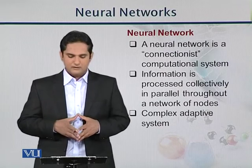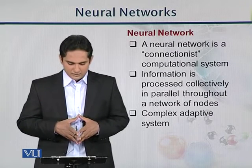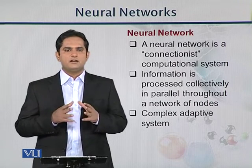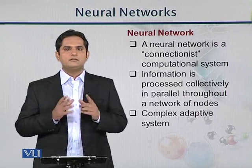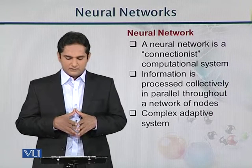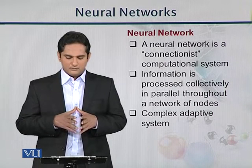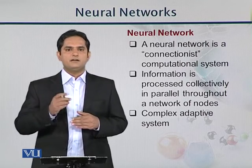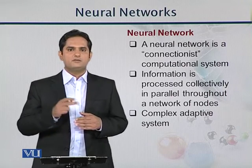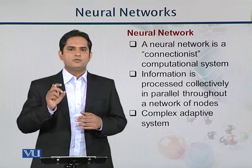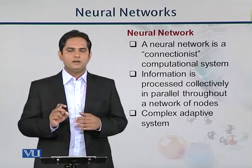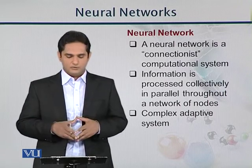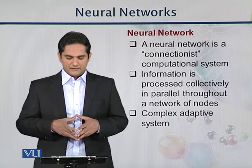So basically, what is a neural network? It is a connectionist computational system. Connectionist means that the resources are all connected to make one network. Then information is processed collectively in parallel throughout a network of nodes. Suppose there are 10 nodes — in all nodes there will be parallel information flow, from the first node, second, third, and so on. Every node processes in parallel, and they have their specific weights. They combine together and then generate the output.